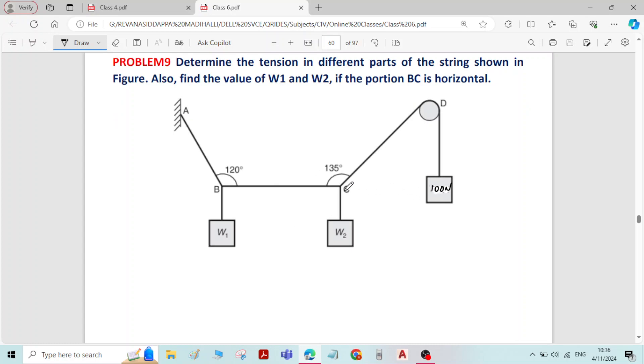And in cable CD there is a force of 100 Newton acting. Now what we can do is we can identify a joint first. How to identify the joint? We have to select the joint in such a way that there should not be more than two unknowns.